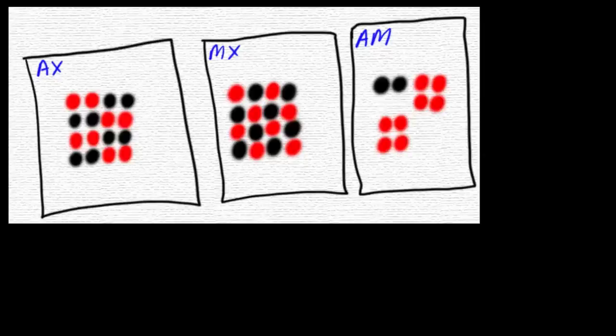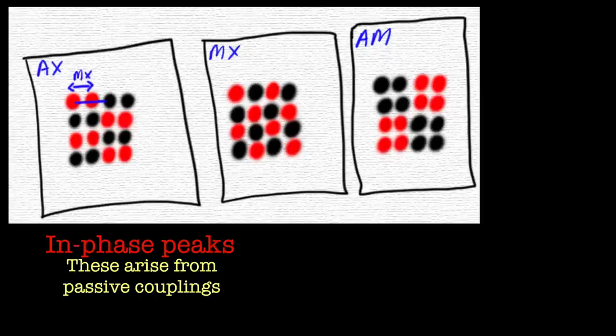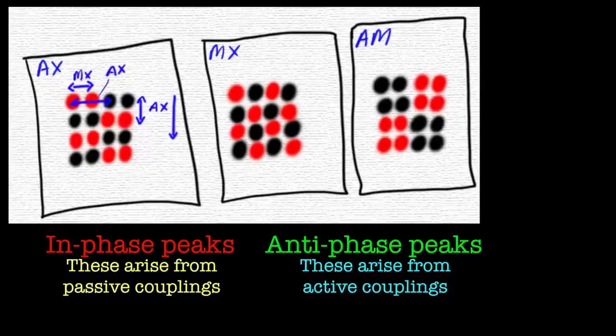So let's just have a look at the cross peaks in a little bit more detail, so let's take them out of the spectrum, if you will. So if we look at the AX coupling, the MX coupling and the AM coupling, they'll have these kind of splitting patterns. So for the AX, because M is just an observer, it's in-phase. And the coupling constant for that is given as the distance between the two peaks.